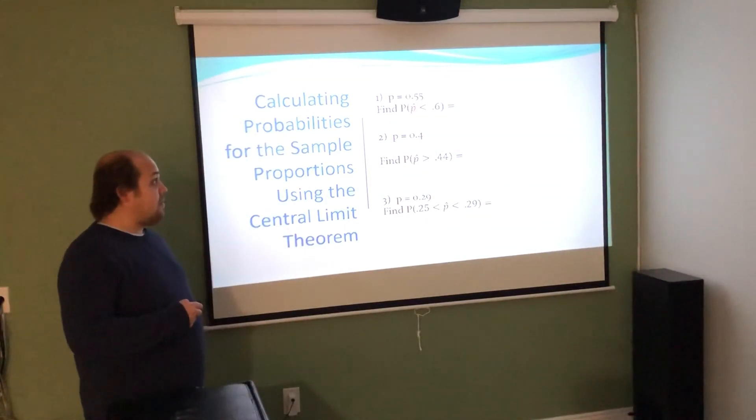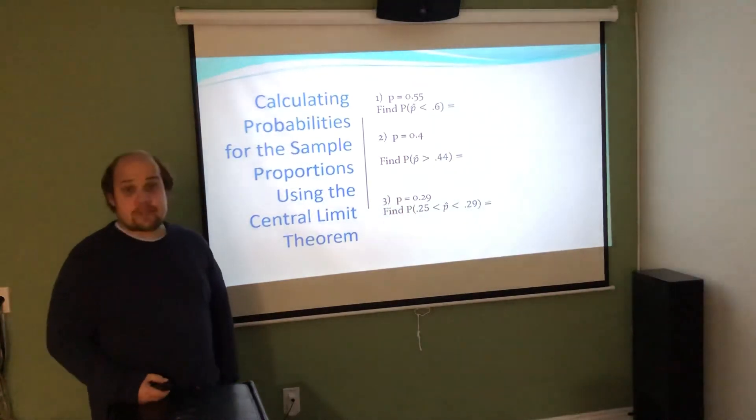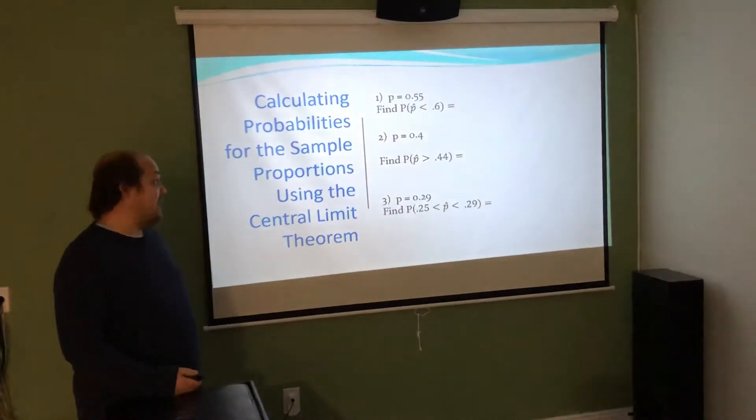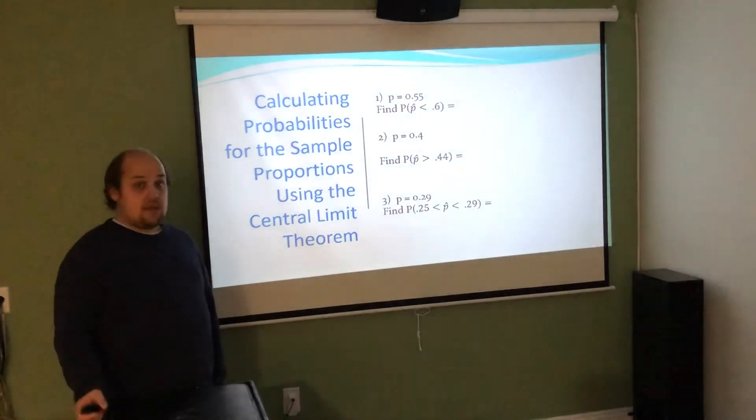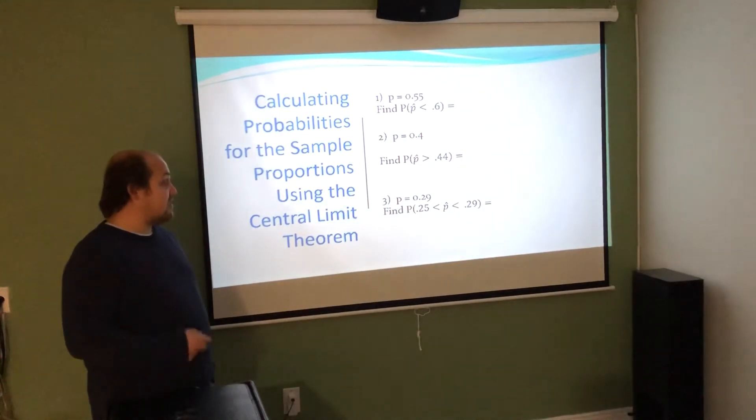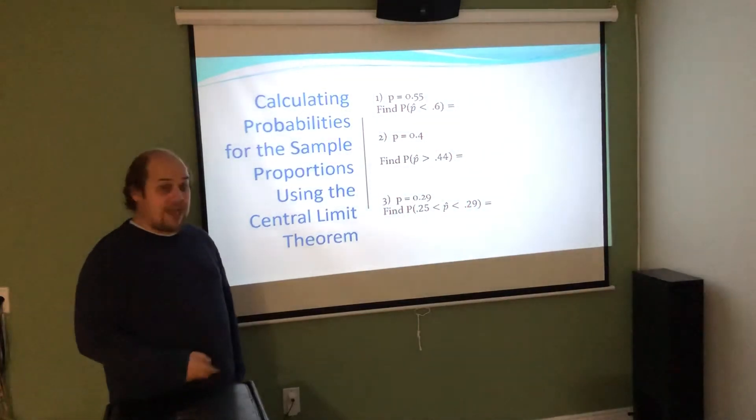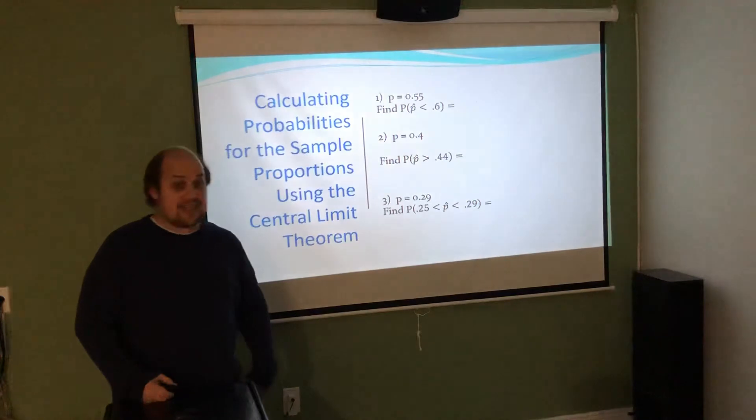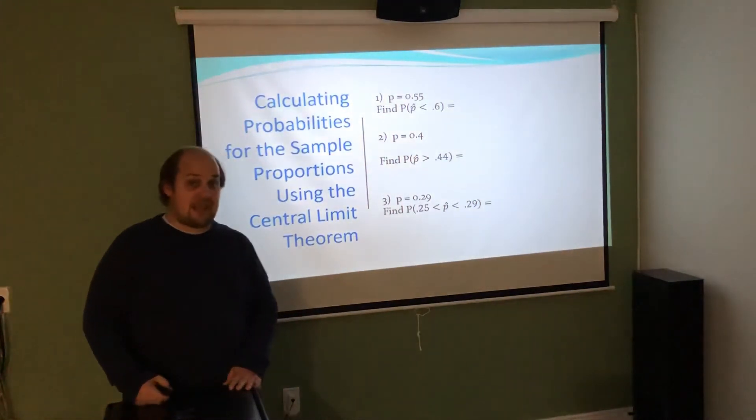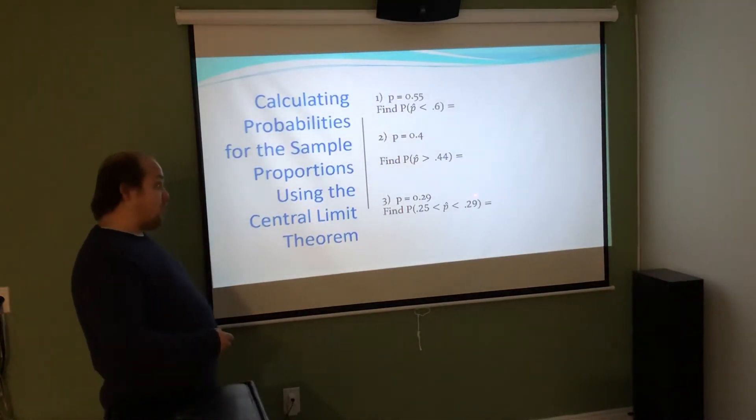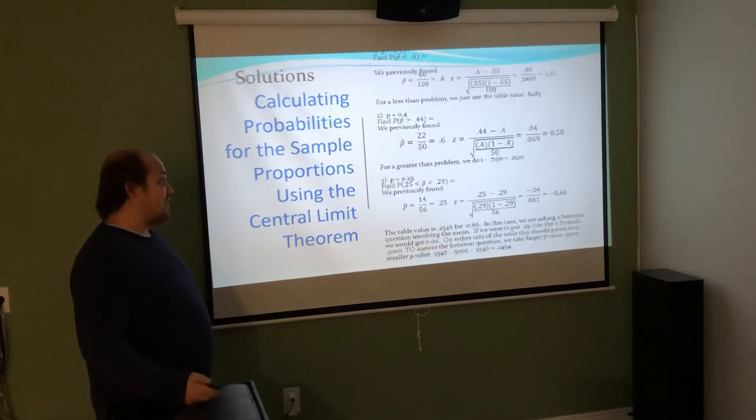If they ask, what's the probability p hat is less than, I take the z-score I calculated on the last page, look up the associated p value, and that will be my answer. For number two, I'm going to take the z-score from the previous page and do the p value associated with it, then do 1 minus that because it's a greater than question. When this is asking between 0.25 and 0.29, we already found the z-score for 0.25. To find the z-score for 0.29, since this is also 0.29, that's happening right at the mean, which has a z-score of 0.00 and a p value of 0.500. I take the larger p value 0.500 minus the p value associated with 0.25, and that tells me my between question.